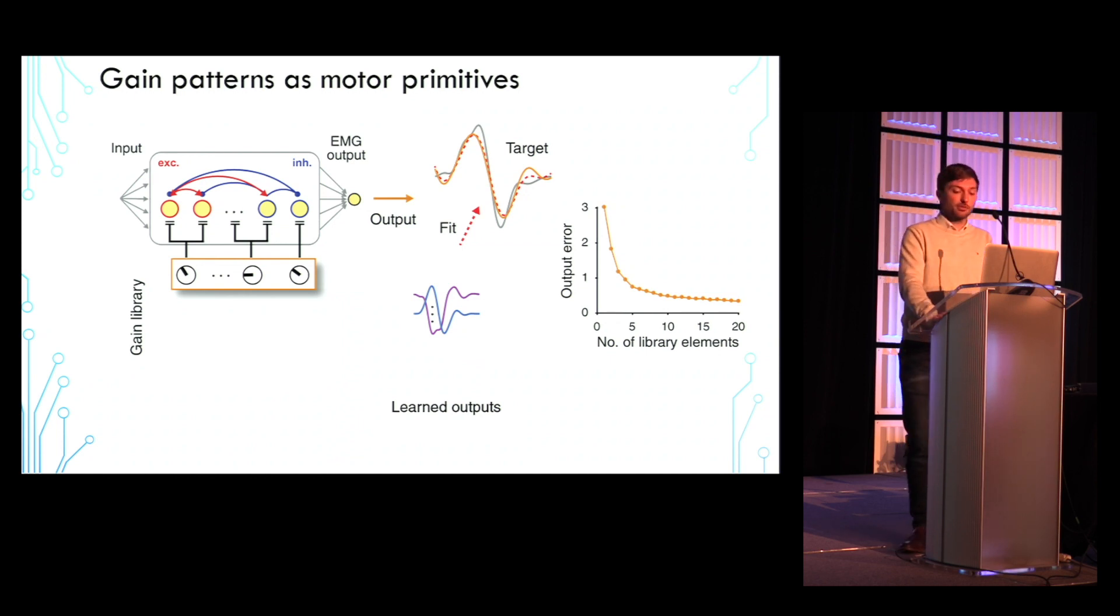Although the idea of using motor primitives to rapidly generate new movements is well established, our model proposes the first, to our knowledge, circuit-level mechanism for achieving this objective.